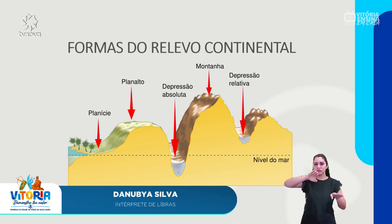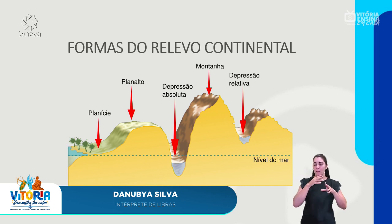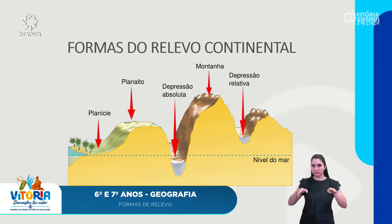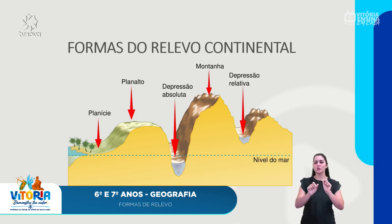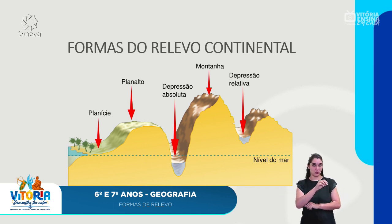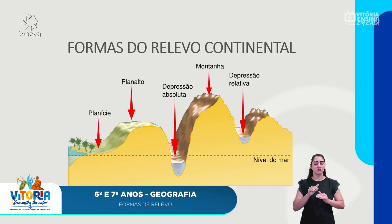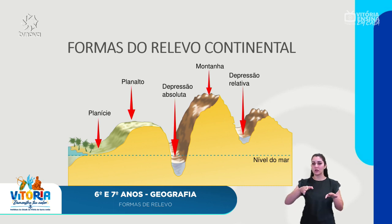O que é forma de relevo? Relevo, como falei na última aula, é toda a forma da superfície da terra, vindo desde as terras submersas até as terras emersas. O relevo resulta de vários agentes que modificam a superfície terrestre: os agentes endógenos, de origem interna, e os agentes exógenos, que atuam sobre a superfície. Os agentes internos são chamados de criadores de relevo e os agentes externos, modeladores de relevo.